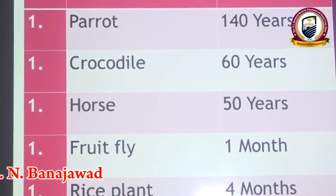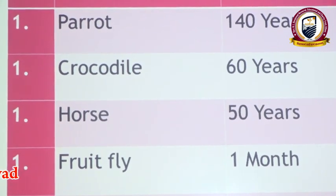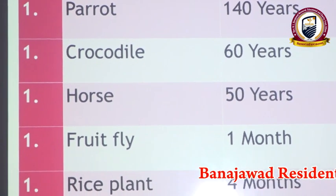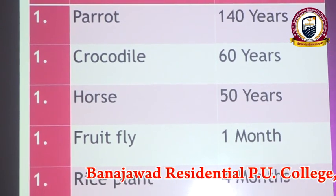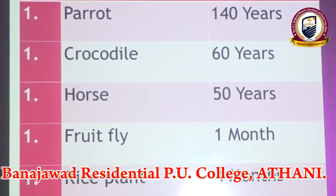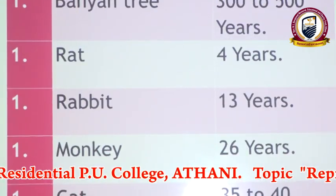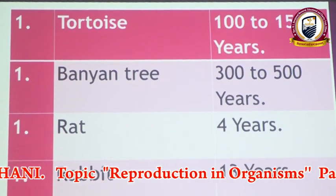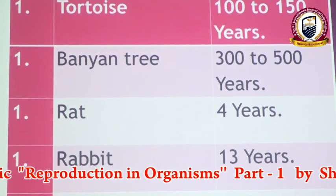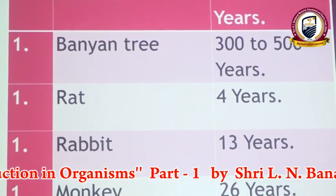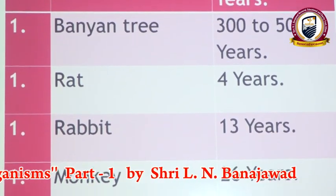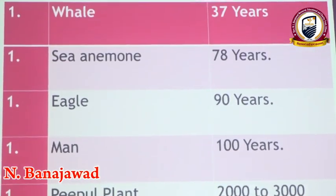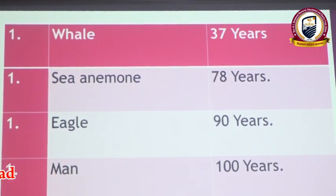As I mentioned earlier, crow and parrot have similar size but different life spans. Crocodile lives for 60 years, horse 50 years, fruit fly one month, rice plant four months, tortoise 100 to 150 years, banyan tree 300 to 500 years, rat lives for four years, rabbit 13 years, monkey 26 years, cat 35 to 40 years, and sea animal 78 years.